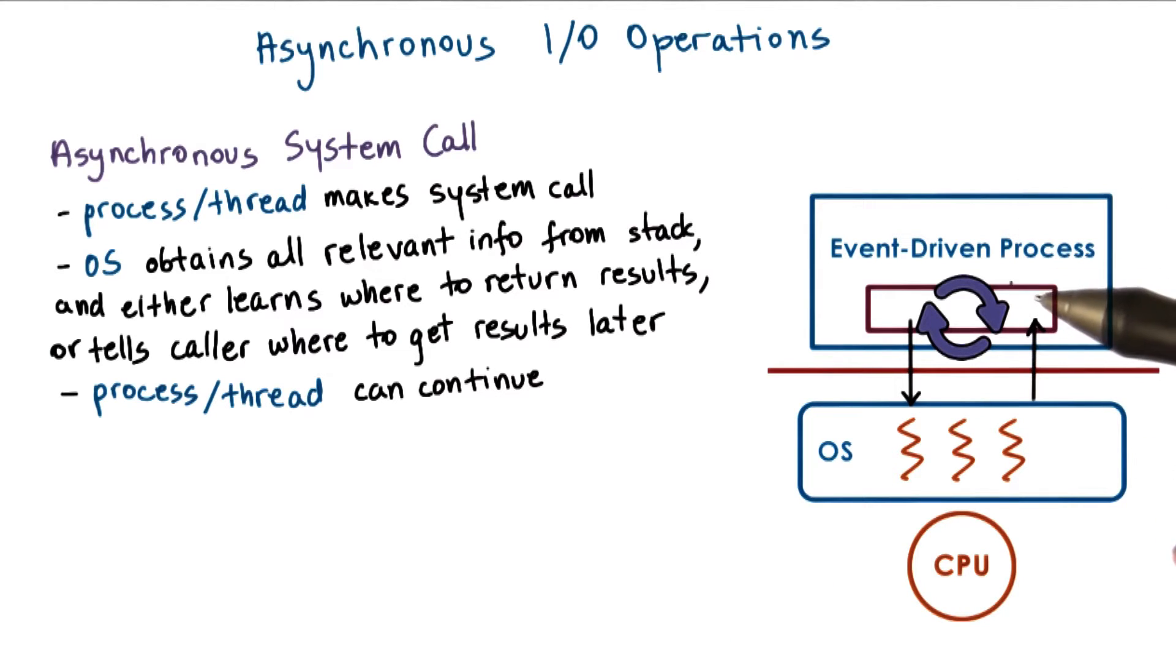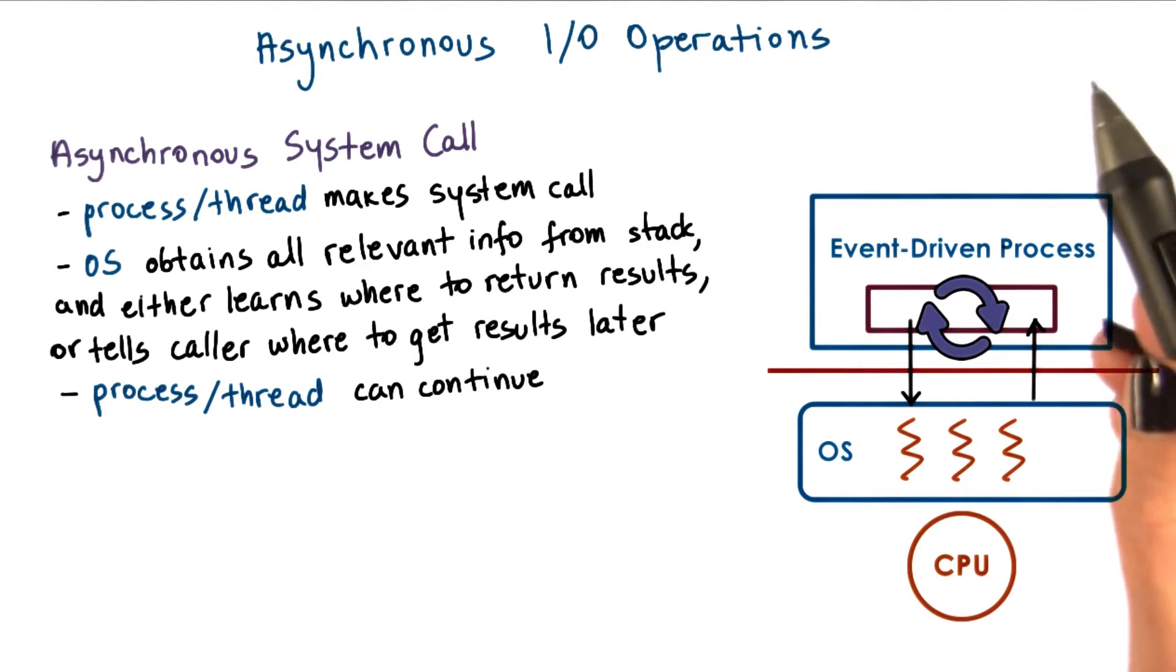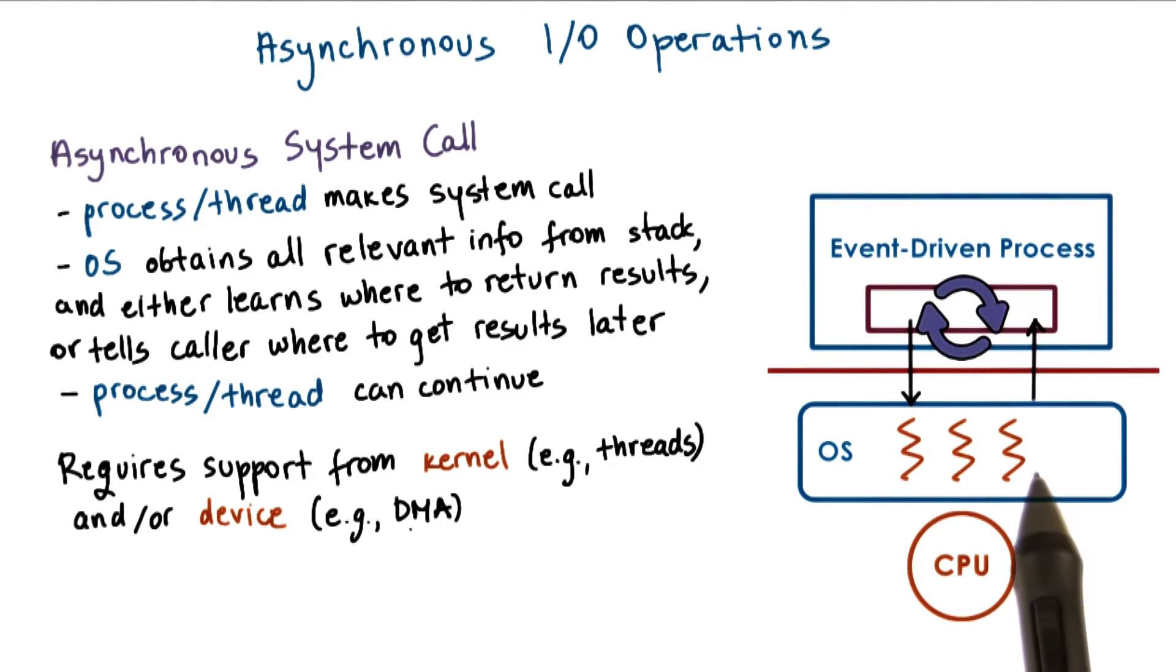For instance, the processor or thread can come back later to check if a file has already been read and the data is available in a buffer in memory. One thing that makes asynchronous calls possible is that the OS kernel is multi-threaded.